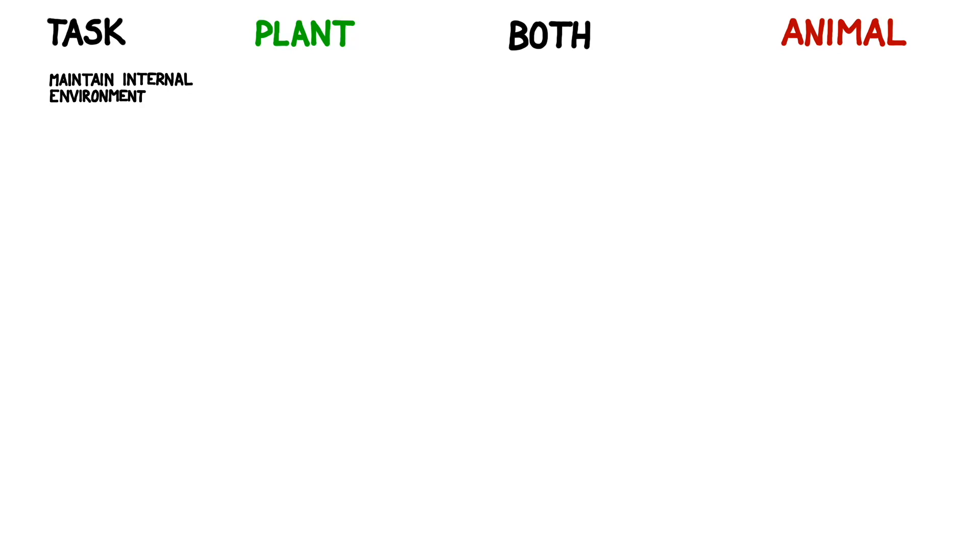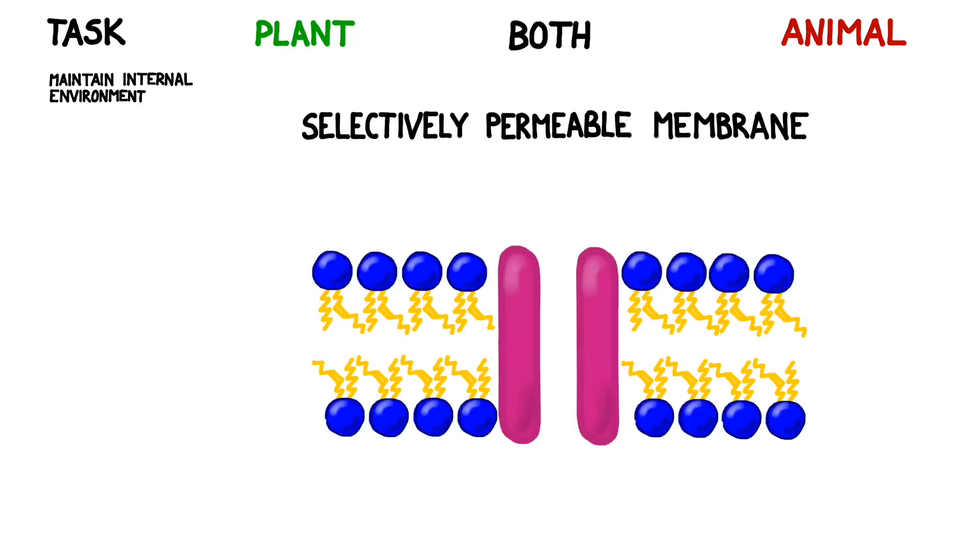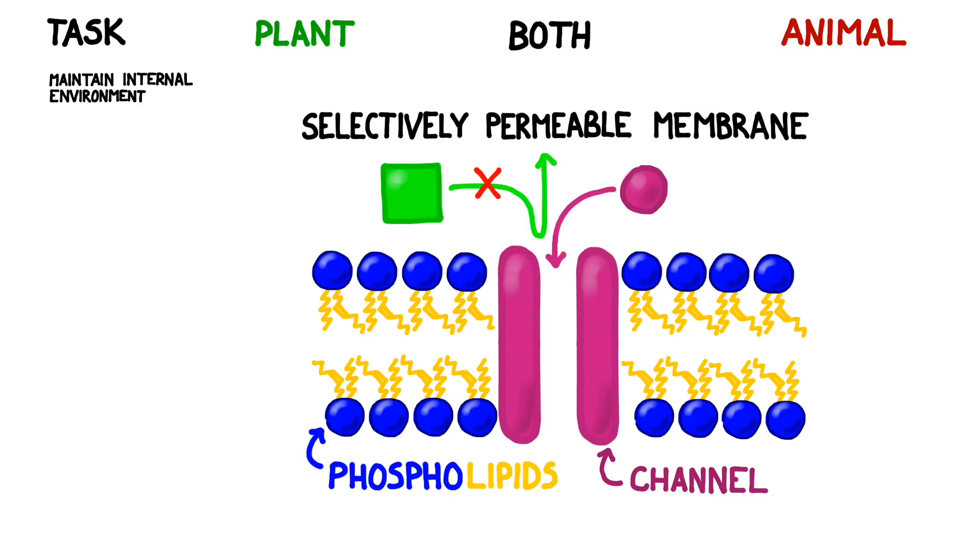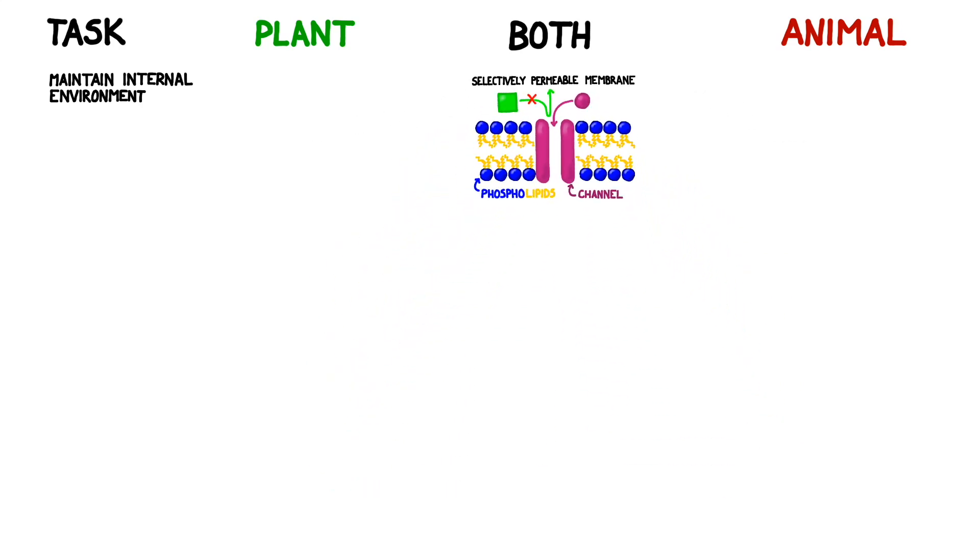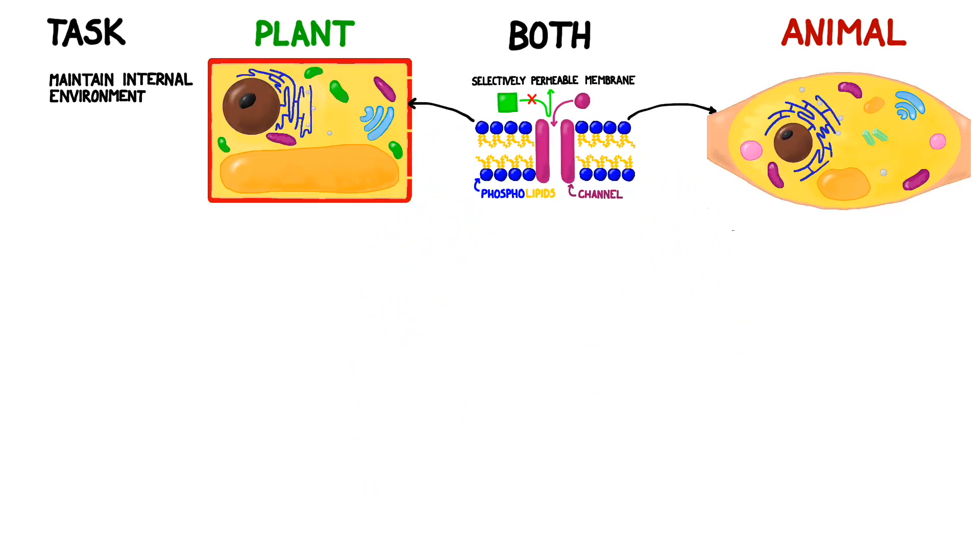The first task we're going to discuss is how cells maintain an internal environment that's different than their external environment. Both plant and animal cells use a selectively permeable membrane that's composed of two layers of phospholipids and studded with channels. These channels only allow certain molecules to pass through and thus play a major role in regulating the internal environment. Plant and animal cells both use a selectively permeable membrane.